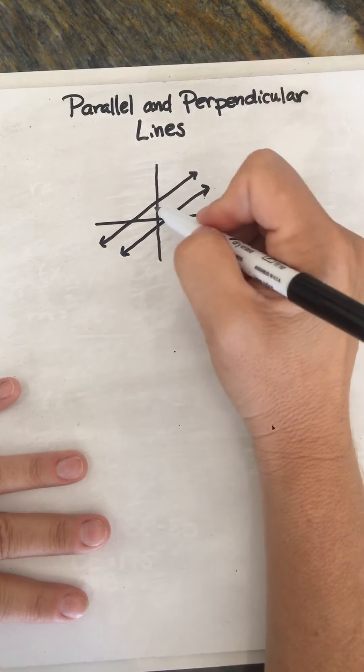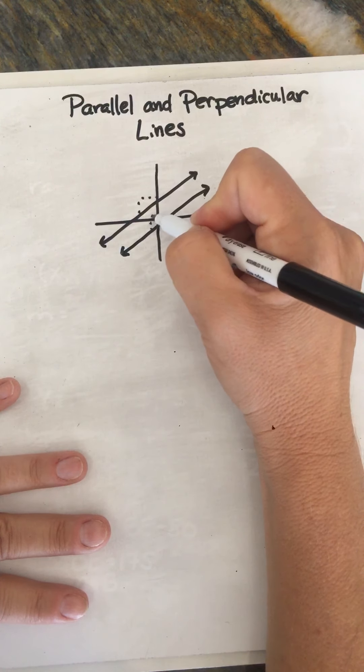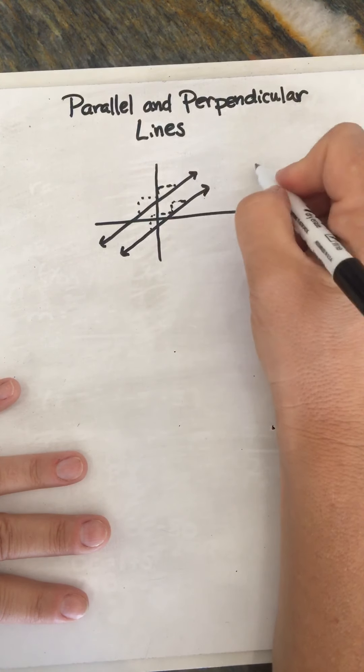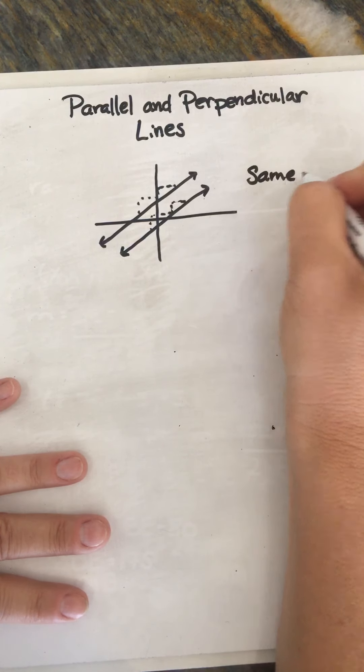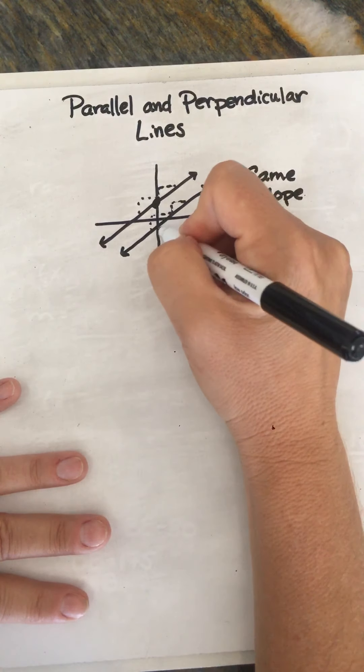So the slopes of these, the ratio of the slope, or pardon me, the ratio of the rise to the run for these guys is going to be the same. So they have the same slope, but different y-intercepts.